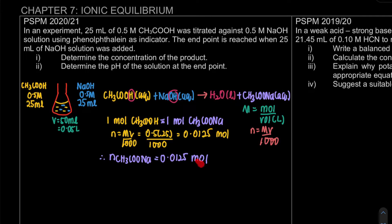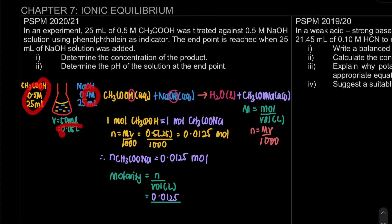Now we have the mol of the product. The volume is 0.05 L (50 mL converted to liters). Molarity = number of mol / volume = 0.0125 / 0.05 = 0.25 mol/L. So the concentration of the product is 0.25 M. That's the final answer for question one.